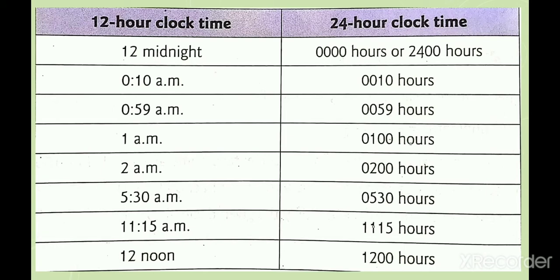This table is given for your better understanding. Here, the time is given from 12 midnight to 12 noon. In 24-hour clock, 12 midnight means 0000 hours or 2400 hours. Like 0:10 AM becomes 0010 hours. The first 2 digits are hours and the next 2 digits show minutes. 1 AM is 0100 hours, 2 AM is 0200 hours, 5:30 AM is 0530 hours.